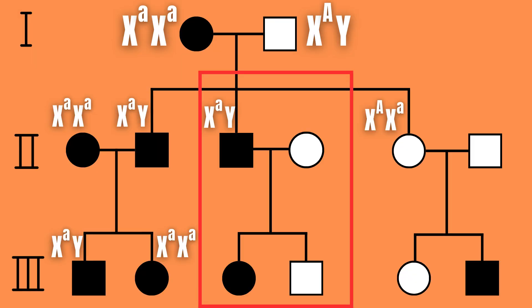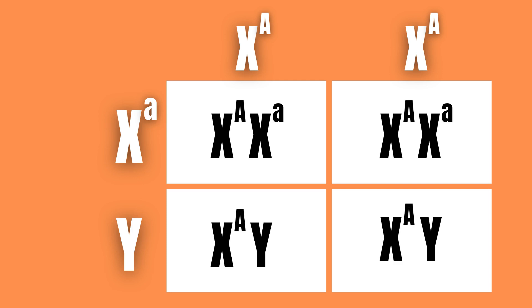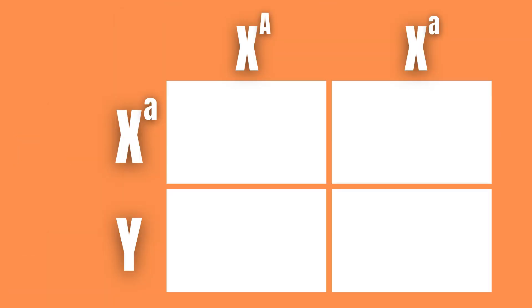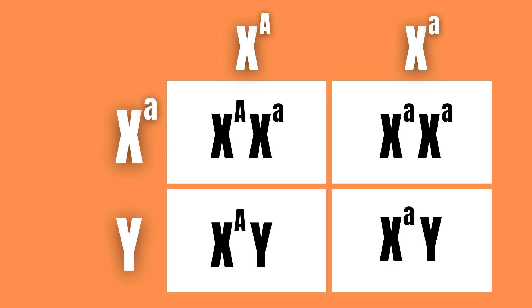Now for the subfamily in the middle. In this case the mother is not affected and initially we do not know if she is homozygous dominant or heterozygous. However, if we set up a Punnett square we quickly notice that if the mother were to be homozygous dominant none of the children would be affected. On the other hand, if the mother is heterozygous dominant it is possible for her to have affected girls as well.